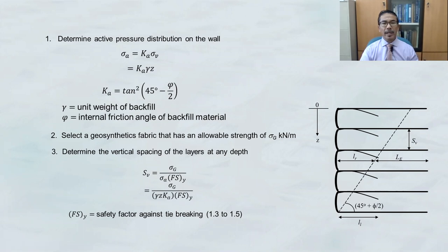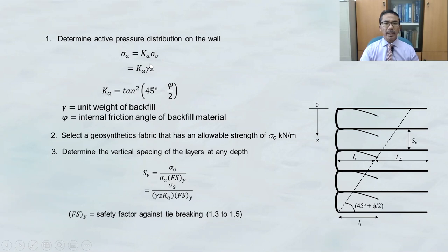Now let's look at the steps to design a retaining structure using geosynthetics. Step one: determine the active pressure distribution on the wall. The active pressure sigma sub A equals K sub A multiplied by sigma sub V, which expands to K sub A times gamma times Z, where K sub A equals tangent squared of (45 degrees minus phi over 2). Gamma is the unit weight of the backfill material and phi is the internal friction angle of the backfill material.